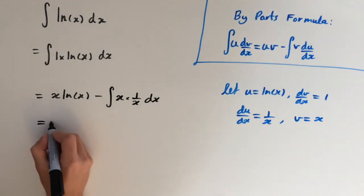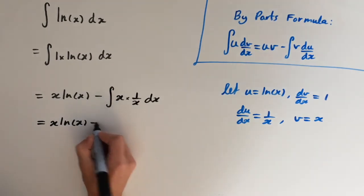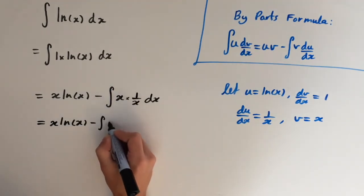So this equals x ln(x) minus integral of 1. These cancel out.